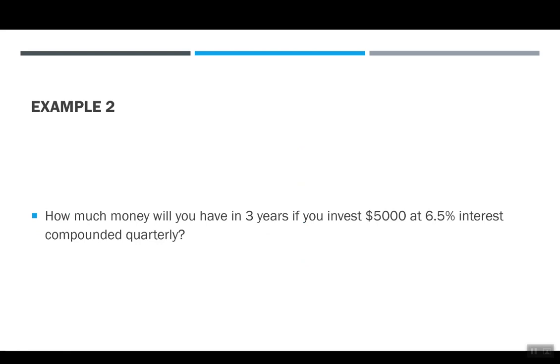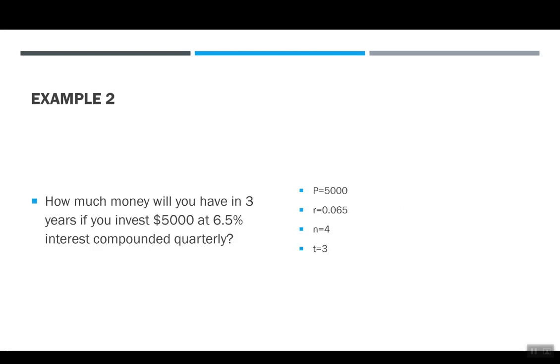So example two. How much money will you have in three years if you invest $5,000 at 6.5% interest compounding quarterly? Let's pull out our pieces of the formula. We can start with P is $5,000, that's how much we're going to invest. 6.5%, I want to write as a decimal, so that's .065. Quarterly means it's four times a year, and then my time is three years.